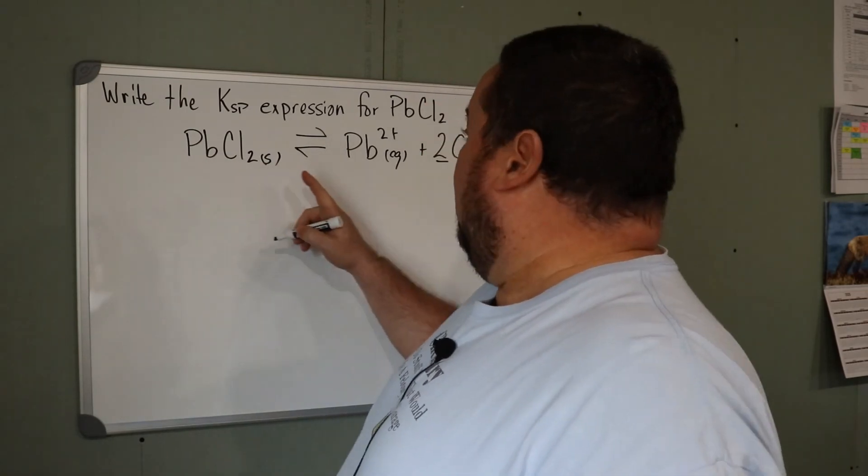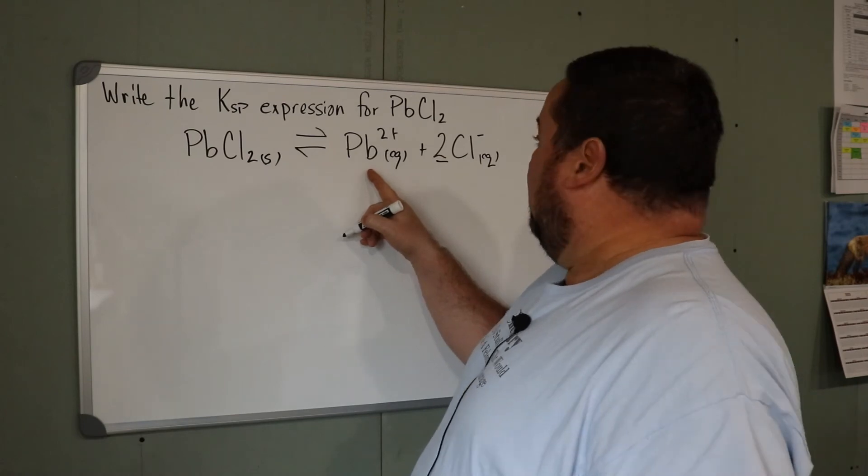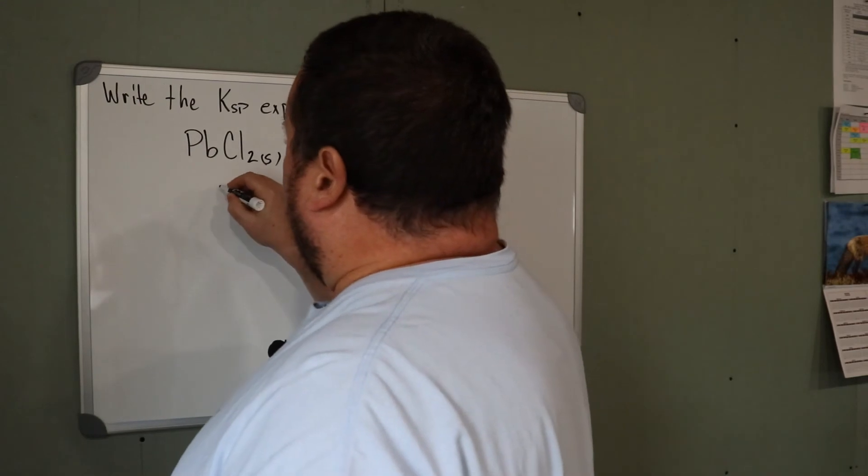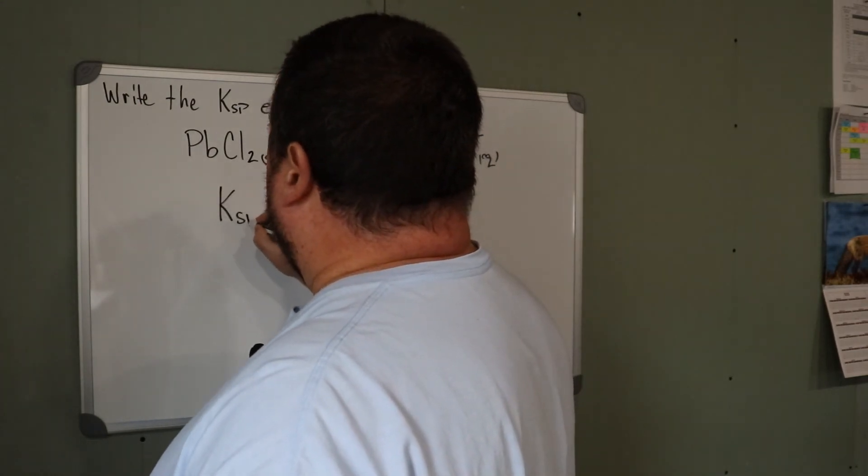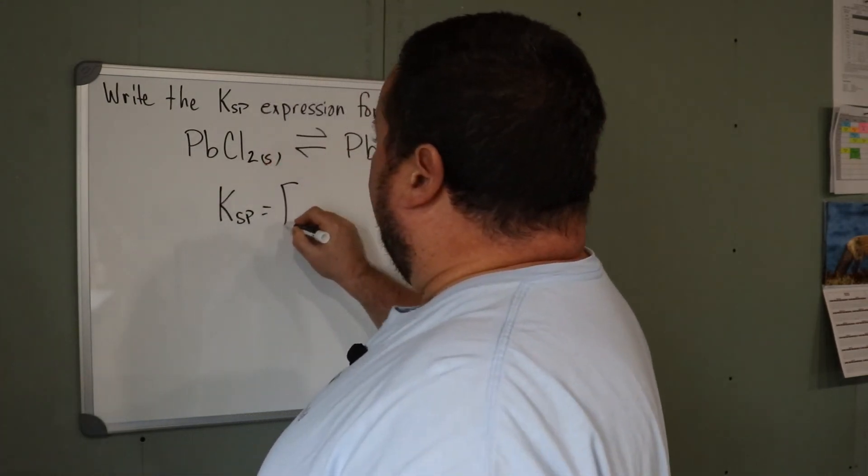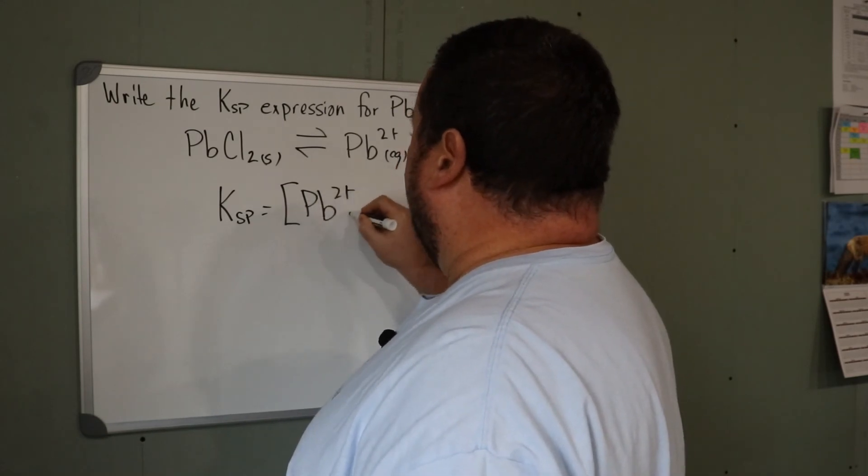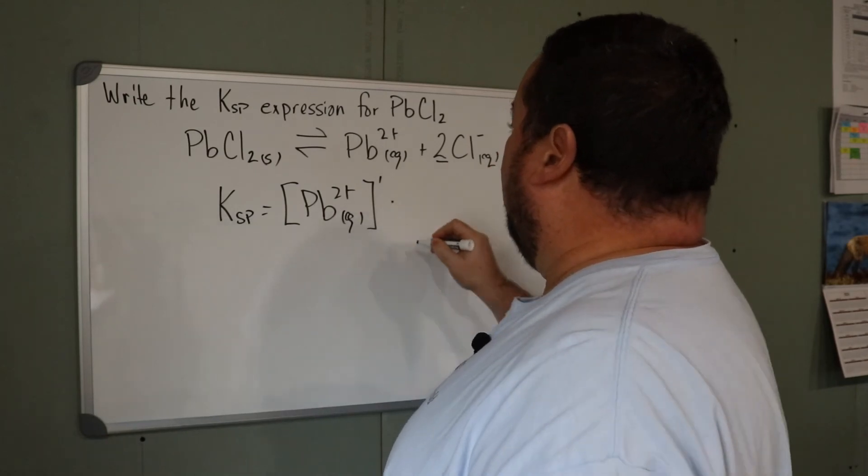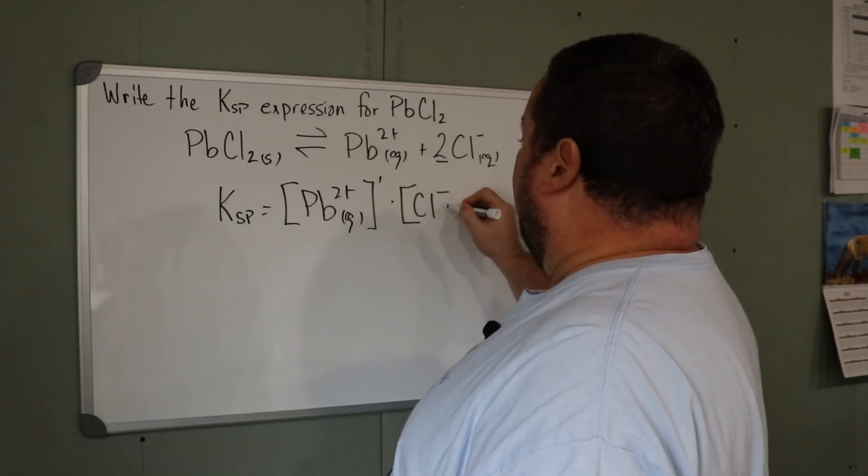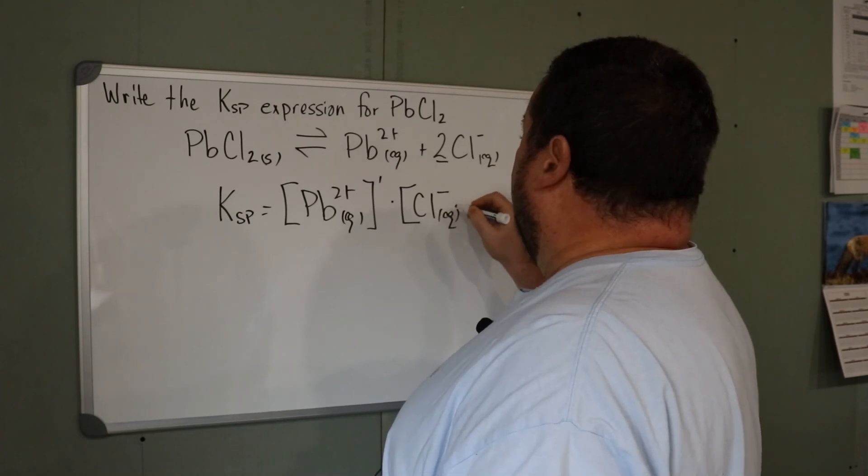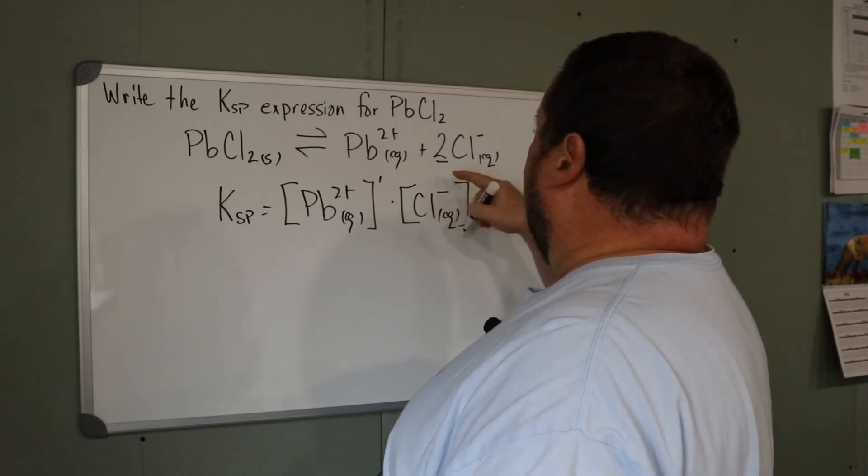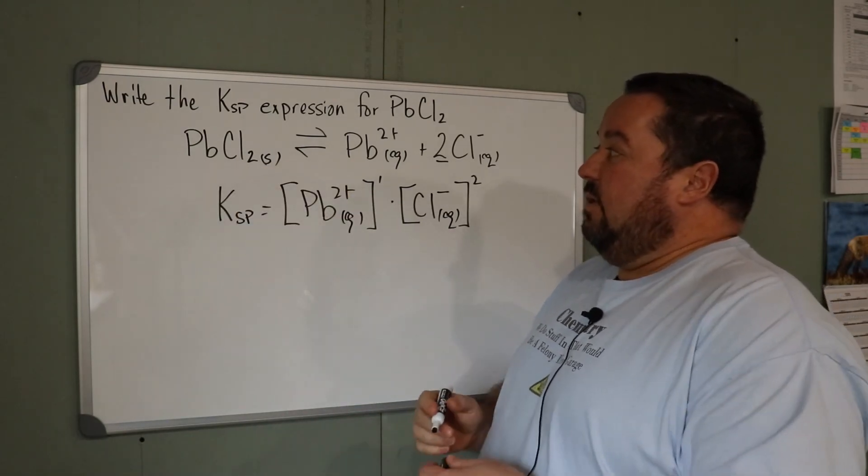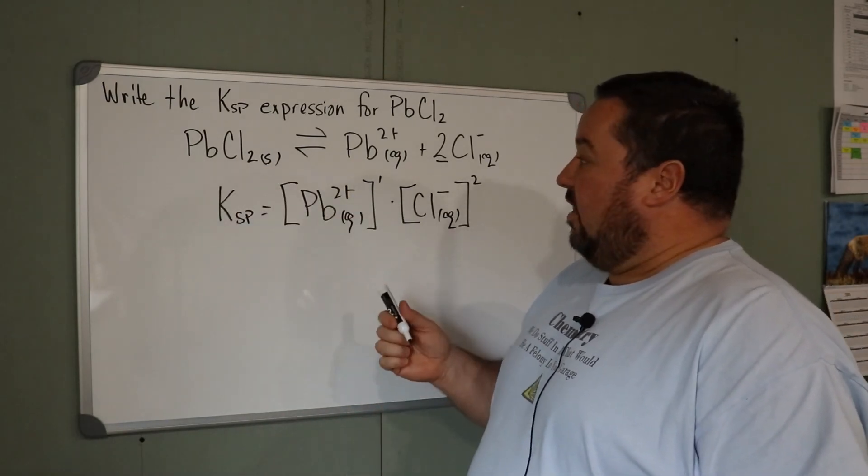Ksp is the concentration of the lead 2+ raised to the first power, multiplied by the concentration of chloride ion raised to the second power because the coefficient is 2. And again, we omit the PbCl2 because it's a pure solid.